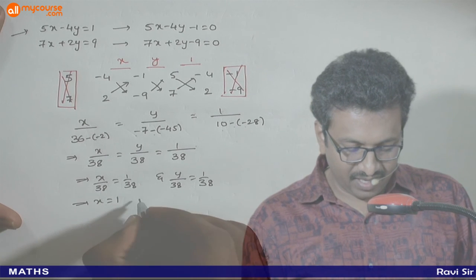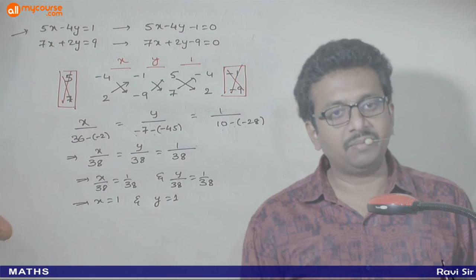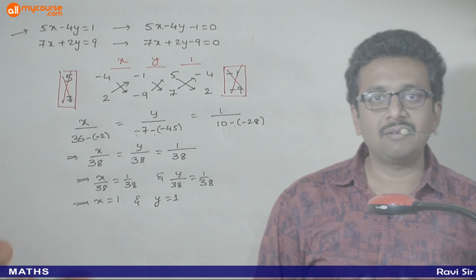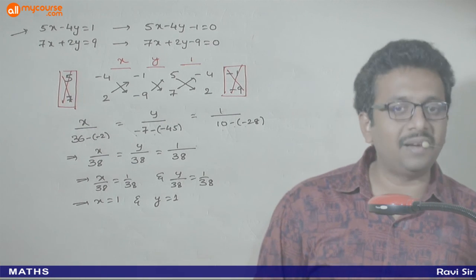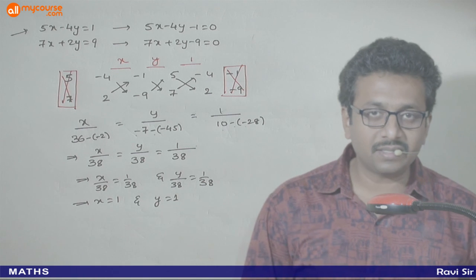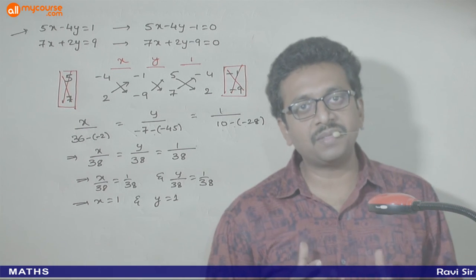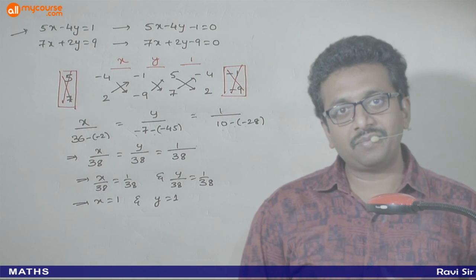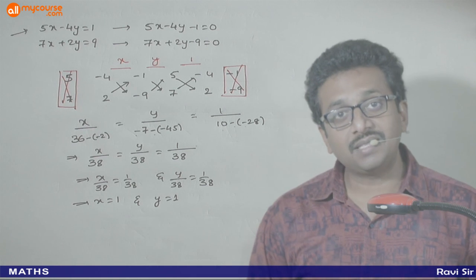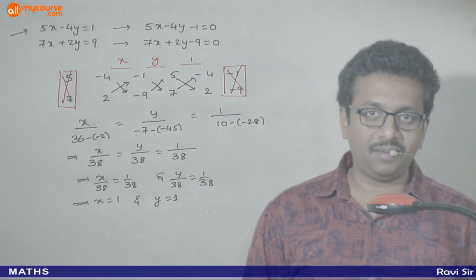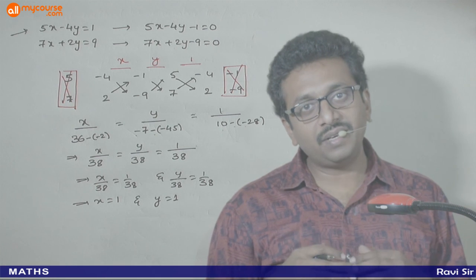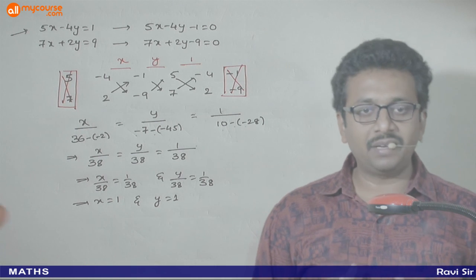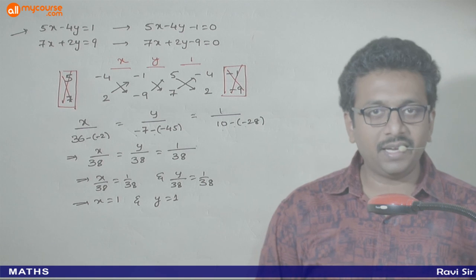Answer aa gaya — x = 1 and y = 1. So this method is called the cross multiplication method. I hope you understand all three methods. Now we will use these three methods to solve different types of equations. First we will do mathematical questions, and last we will do word problems in this topic.